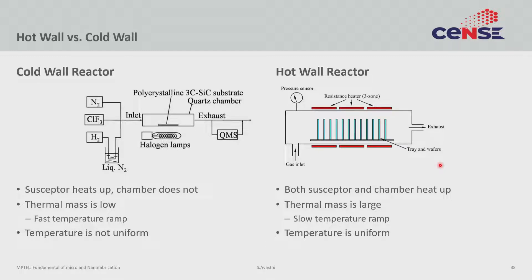Often you cannot cool down a hot wall reactor faster than around 5 degrees C per minute. However, the hot wall reactor gives uniform temperature, while the cold wall reactor allows very fast temperature changes. It really depends on what type of growth you need — the ability to change temperature quickly, or temperature uniformity.